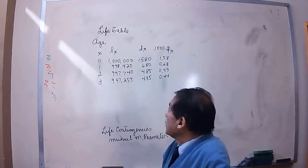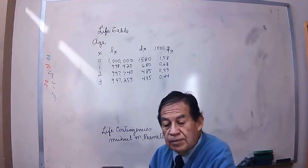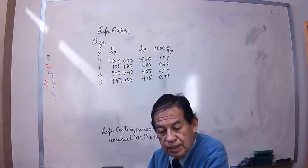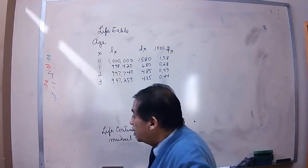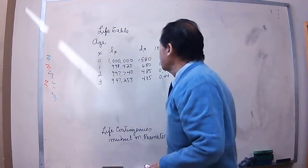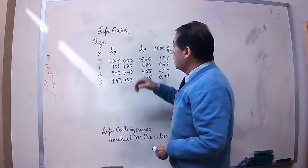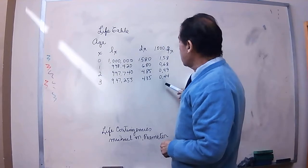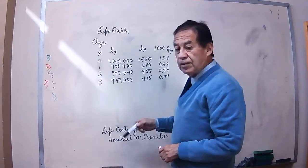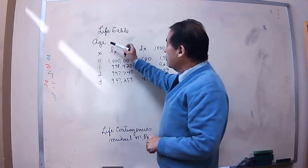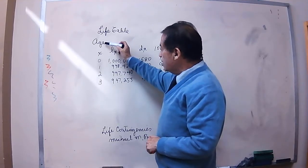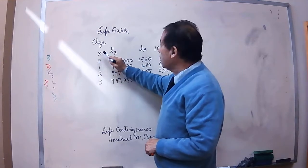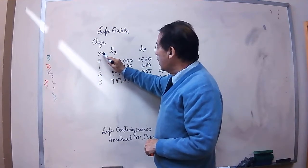In actuarial mathematics, we work with life tables. This is an example of a life table. In this table we have the age, which is represented by X.